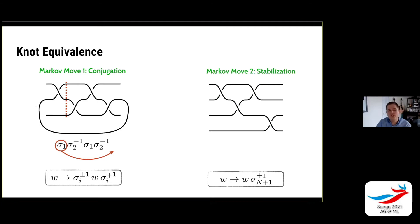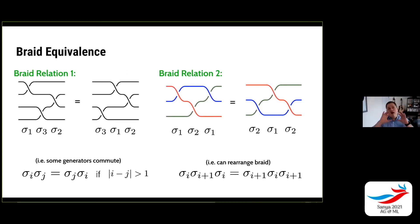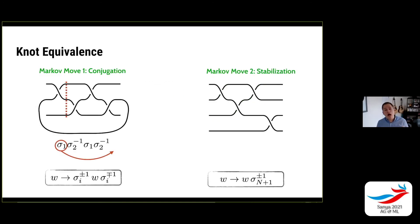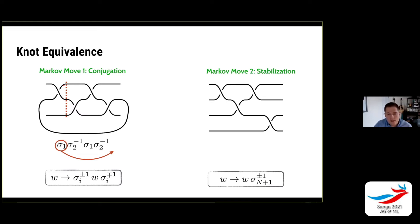If we have braids that can be closed into knots, we can ask: are there things we can do to braids that change the braid but preserve the topology of its closure — the knot? Knot equivalence is encoded in Markov moves on the braids, which become Reidemeister moves on the knots. The first Markov move is conjugation, where you conjugate the braid word by some elements of the Artin braid group with opposite signs, which cancel out in the closure.